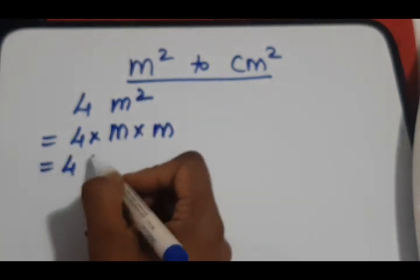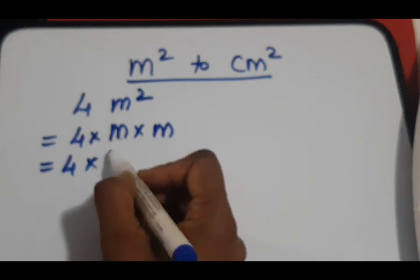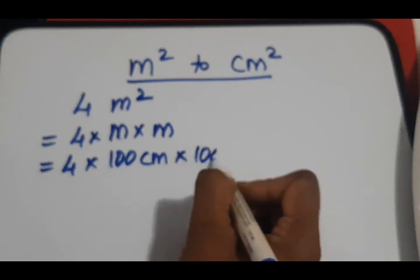In the next step we retain the number as it is and we replace every meter by its equivalent centimeters, which is 100 centimeters times 100 centimeters.